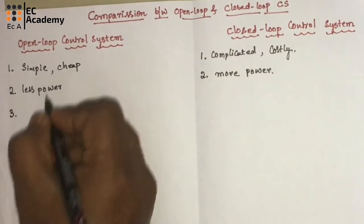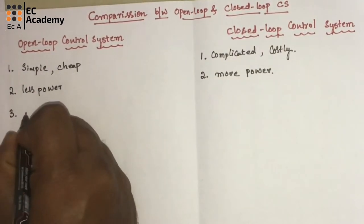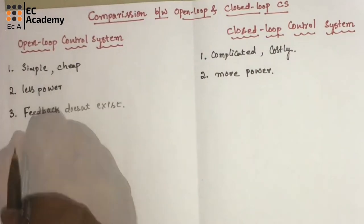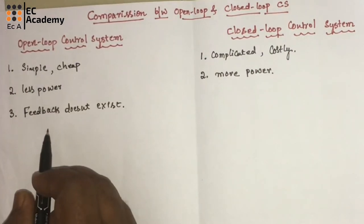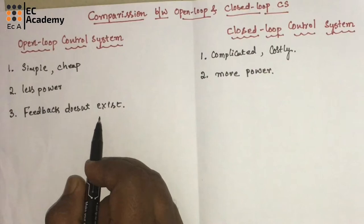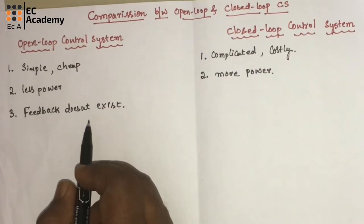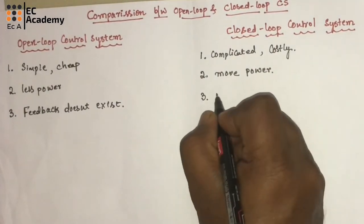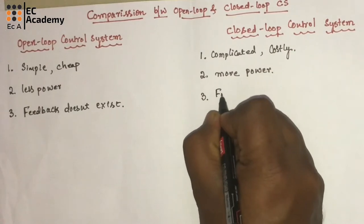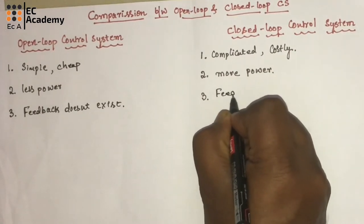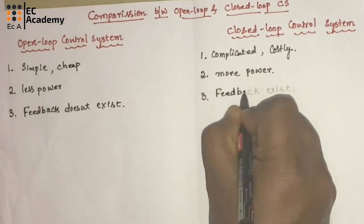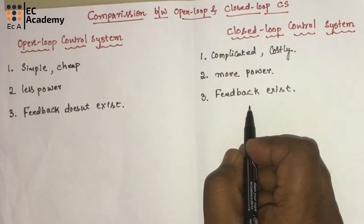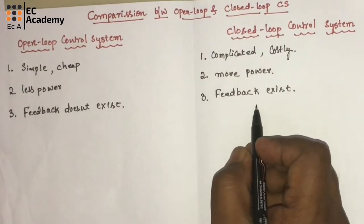In case of open loop control systems, feedback does not exist. Since there is no feedback, any change at the output has no effect on input. In case of closed loop control systems, we have feedback, and since there is a feedback, any change at the output will affect the input.